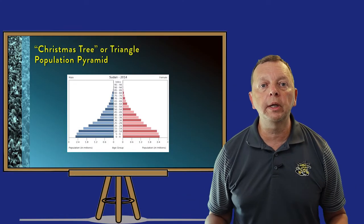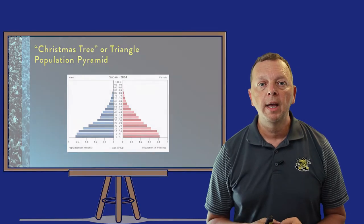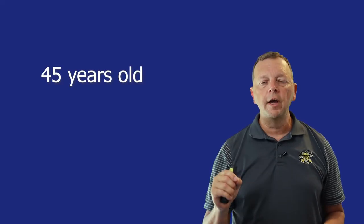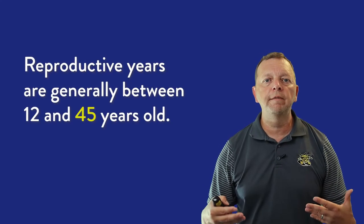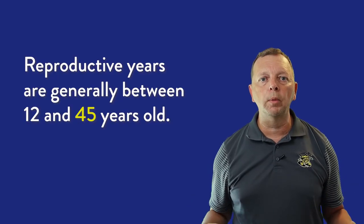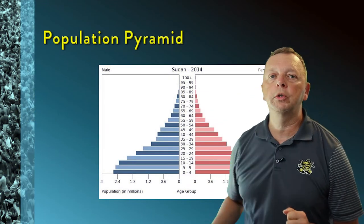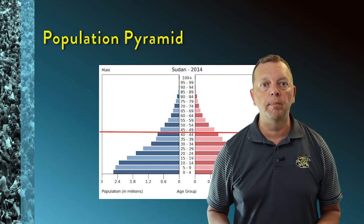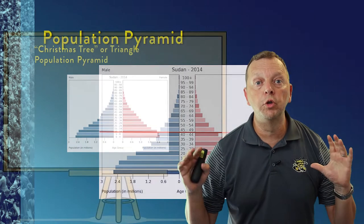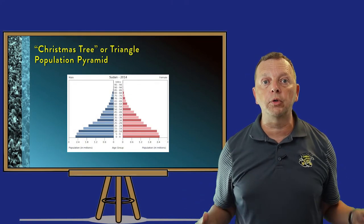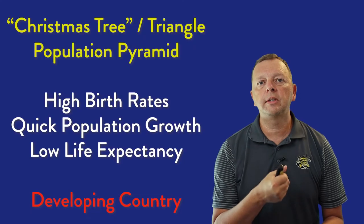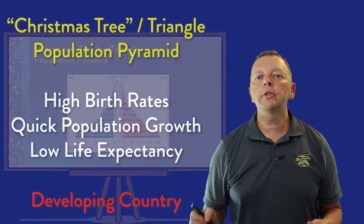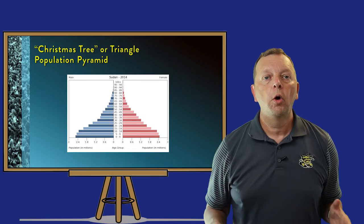Looking at the population pyramid of the African country of Sudan, we find it has far more young people than old — this is called a Christmas tree or triangle population pyramid. The important age to look at is 45, because most reproduction is done by those under 45. Sudan's pyramid shows most of its population is under 45 and can still reproduce, resulting in a high birth rate, high growth rates, and short life expectancy. This is typically what we find in developing or poor countries.